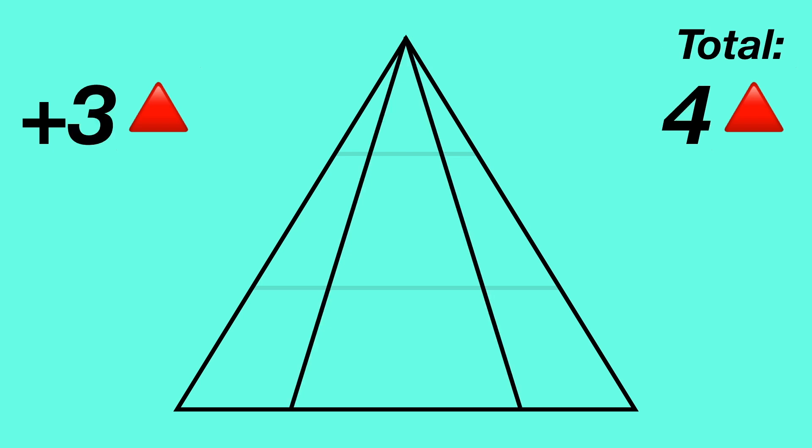Now we bring the two longest lines and see that there are three more triangles. That brings the total to four triangles.